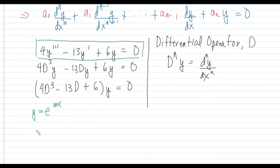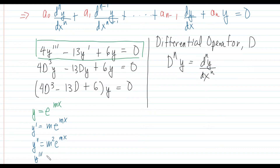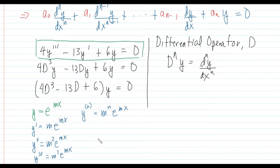Let's examine the derivatives of this solution. The first derivative is m·e^(mx), the second derivative is m²·e^(mx), and the third derivative is m³·e^(mx). We can conclude that for the nth order derivative, it is simply m^n · e^(mx). You can see that pattern right there.